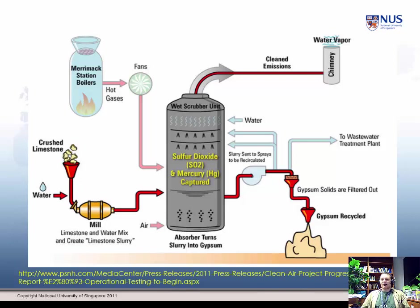A question for thinking chemists: we have gypsum and in there is also the mercury. Where does the mercury go? The answer is it goes nowhere at all — it's in the gypsum. But the amount of mercury is very small with respect to the amount of gypsum, so the actual mercury levels in the product are very low. Nonetheless, it's still in there.